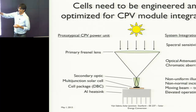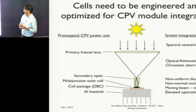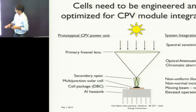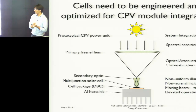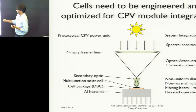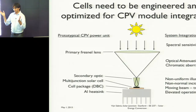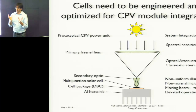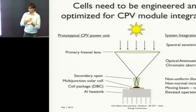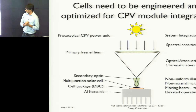The Fresnel lens and secondary optic will actually reduce the intensity of the light on the solar cell as well. Because you're focusing light down onto a solar cell, you can have a very tight spot. The light is coming in at different angles of incidence, and as you're tracking throughout the day you might have a little bit of tracker error that moves the beam around on the solar cell.